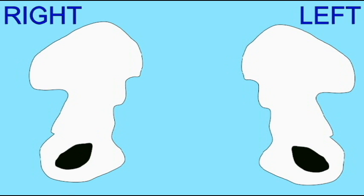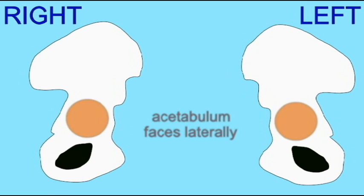In order to distinguish the right os coxa from the left os coxa, one needs to determine which side is superior, which is lateral, and which is anterior or posterior. The iliac crest is the superior portion of the os coxa. One can feel it inside one's belt line, and so clearly this is the part of the bone which faces superiorly.